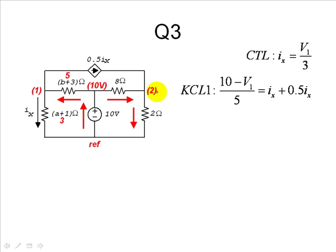K-scale for node two. Currents that go in? 0.5 IX and this one. This one is 10 volts minus V2 divided by 8 plus 0.5 IX. That is equal to the current leaving the node V2 over two. We have three equations and three unknowns: V1, IX, and V2. We enter those equations in our calculator.